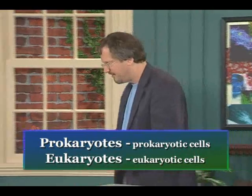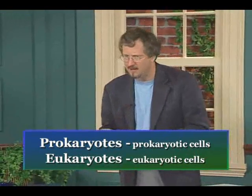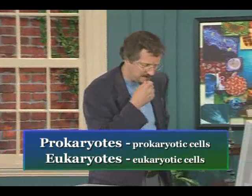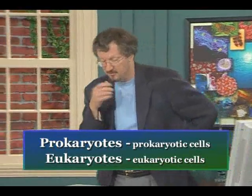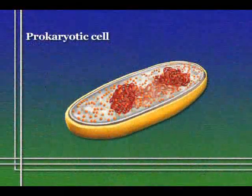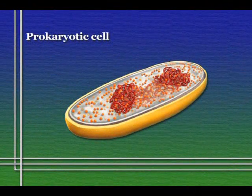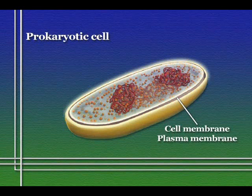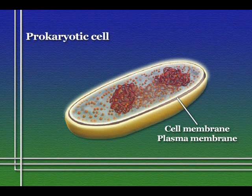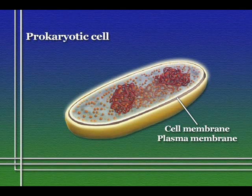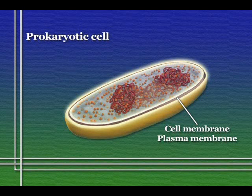Prokaryotic cells are the things we've been talking about when we've been giving these arguments about the origin of life on Earth. And like those protocells, prokaryotic cells are enclosed by a single membrane — sometimes called the cell membrane, sometimes called the plasma membrane. This plasma membrane is primarily composed of a particular kind of organic molecule: lipids.